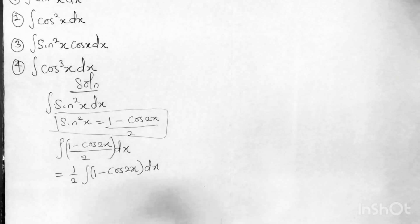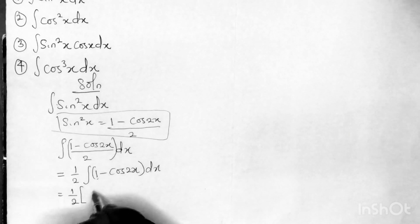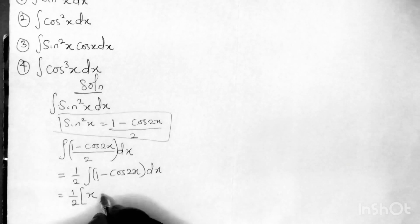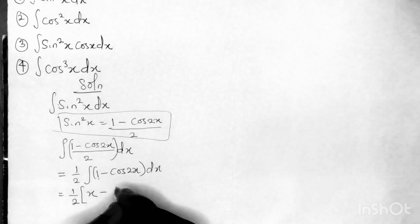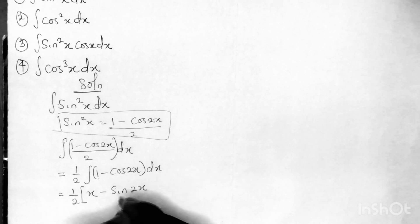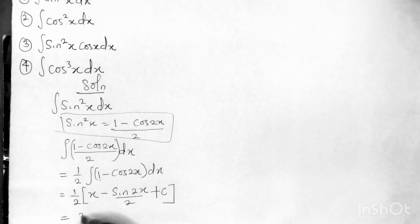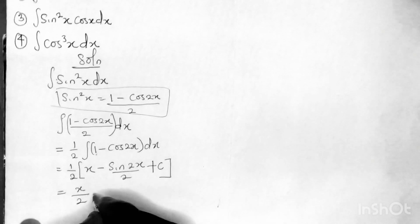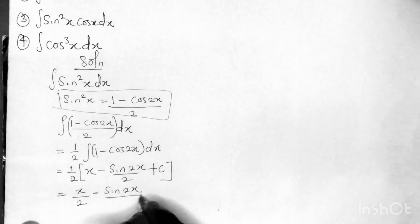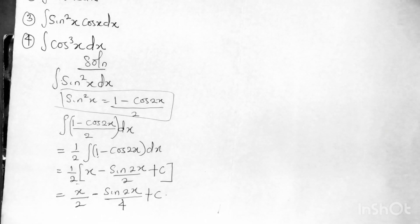From here it is very simple. What you need to do: integrate 1 to get x, then integrate cos 2x to get sine 2x over 2, plus C. Multiplying through by 1/2 gives x over 2, and then minus sine 2x over 4, plus C. So this is the final answer for our first example.